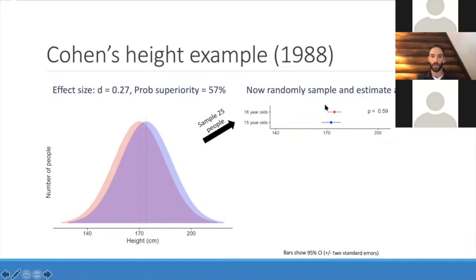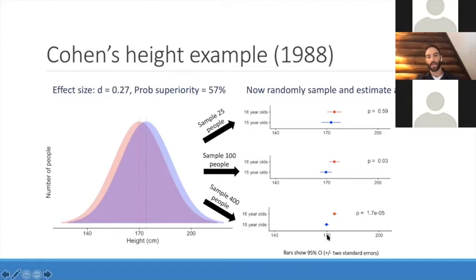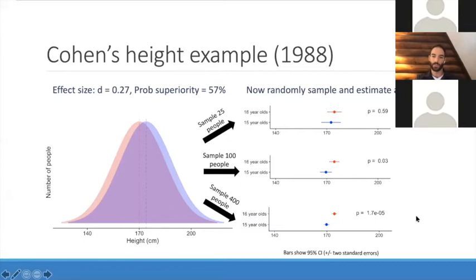You realize you're underpowered and need a bigger survey. So you sample 100 16-year-olds and 100 15-year-olds — upping sample size by four, cutting standard errors in half. Now you get a statistically significant result. Maybe you're a great scientist who wants solid results, so you up the sample by another factor of four to 400 people. You get means of 170 and 174 almost exactly, very tiny confidence intervals, and an insanely small p-value. The standard errors and p-values decrease with more data — that square root N in the denominator — despite the same underlying effect size.